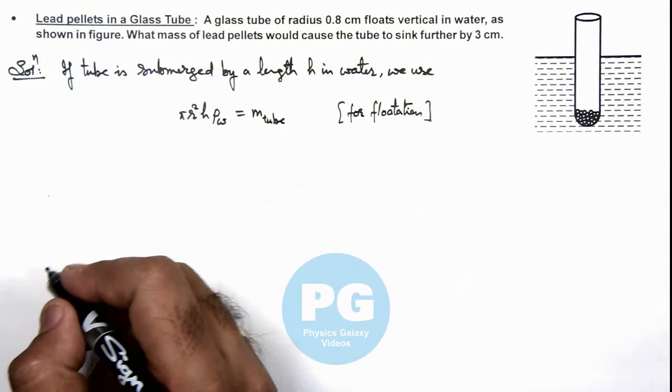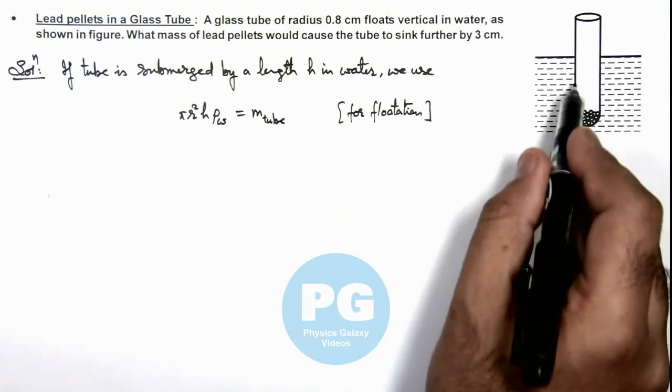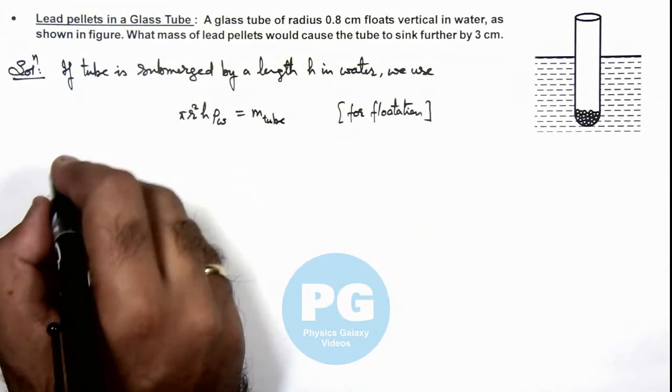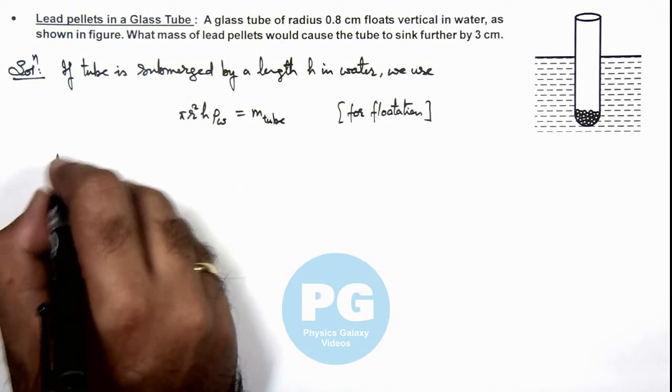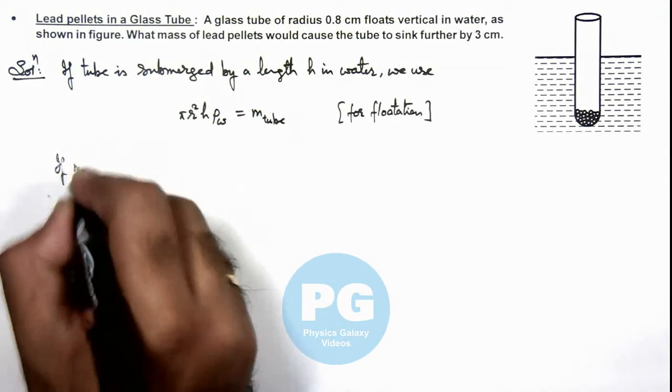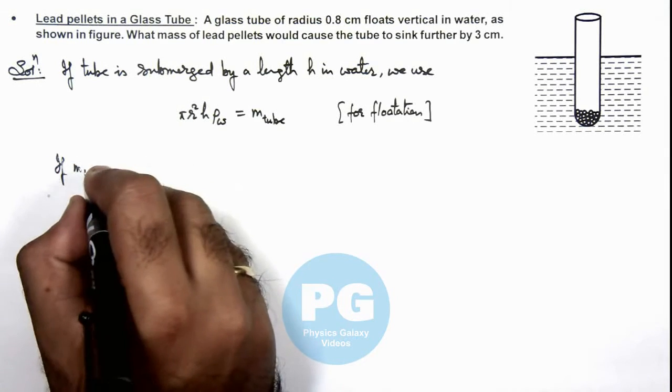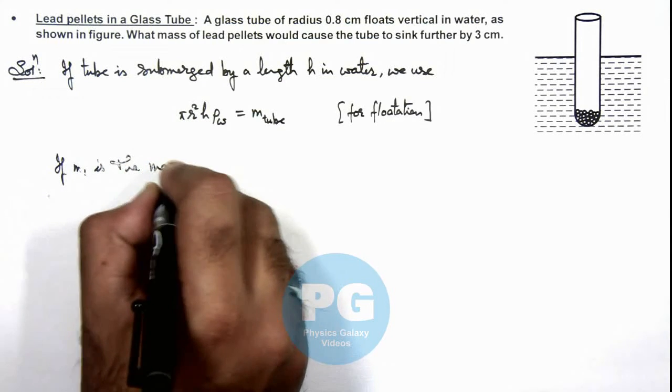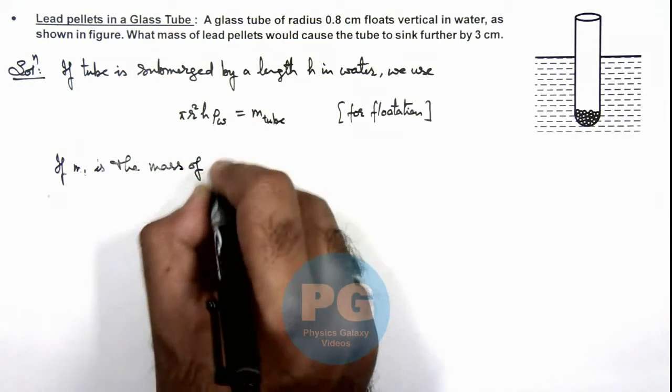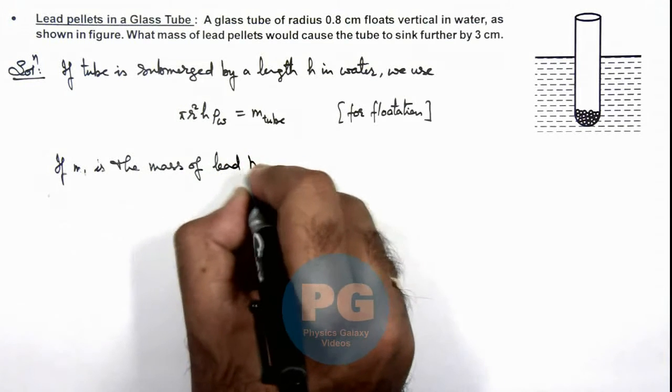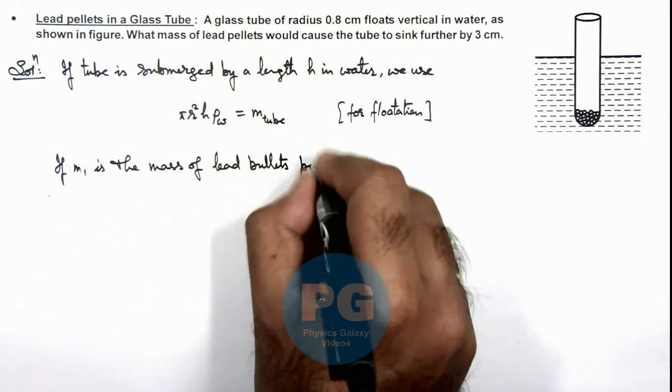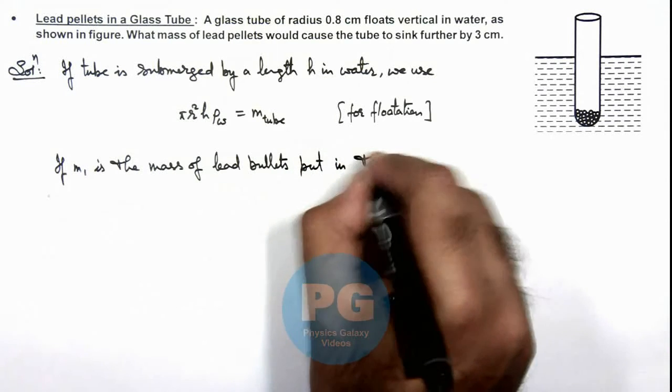Now in this situation, if we wish to sink the tube further by 3 centimeter, then we can say if m₁ is the mass of lead bullets put in the tube,